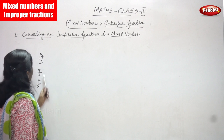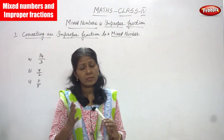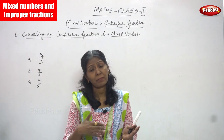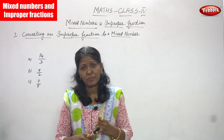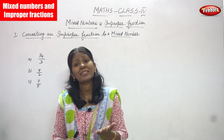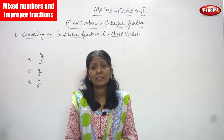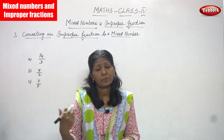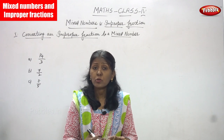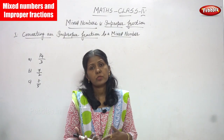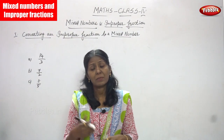Now we are going to solve the problem. It is an improper fraction. First, let me tell you what is a proper fraction, improper fraction, and mixed fraction — already explained in the last class but I'll give you a short brief. A proper fraction means the numerator is less than the denominator. An improper fraction means the numerator is greater than the denominator. A mixed fraction is composed of a whole number and also a proper fraction — it is called a mixed number or mixed fraction.